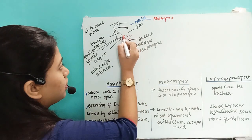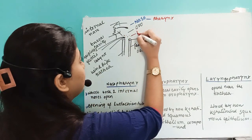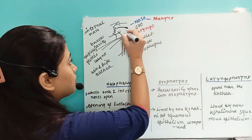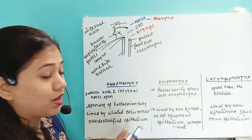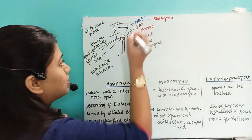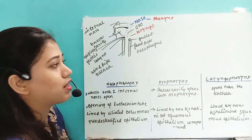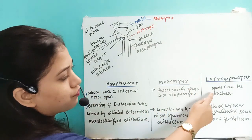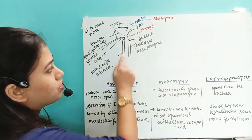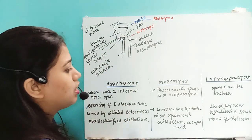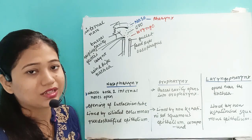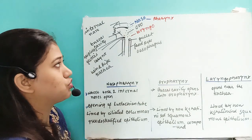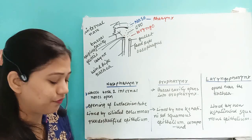The last part is the laryngopharynx, located near the trachea — wherever the trachea opens, that region is the laryngopharynx. Just above it is the oropharynx, and above that is the nasopharynx. Together, nasopharynx, oropharynx, and laryngopharynx form the pharynx as a whole. The laryngopharynx is also lined by non-keratinized compound squamous epithelium.